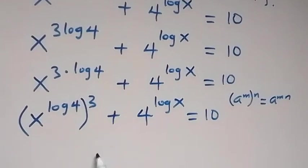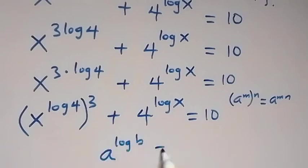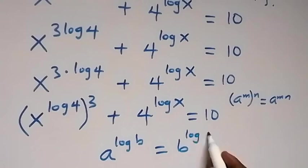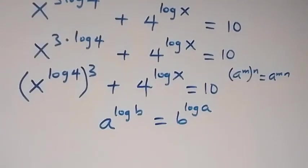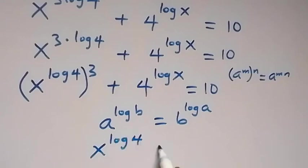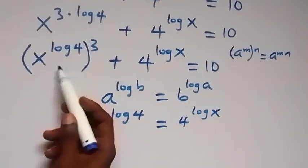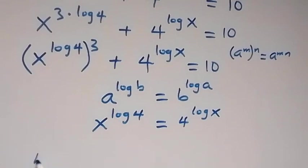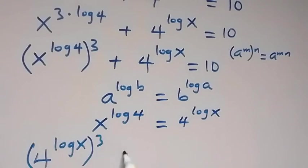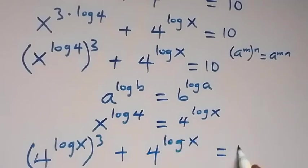When we have a raised to power log b, this is the same thing as b raised to power log a. It follows that x raised to power log 4 is the same as 4 raised to power log x. So we can substitute, and this becomes (4 raised to power log x) raised to power 3, plus 4 raised to power log x, equals 10.